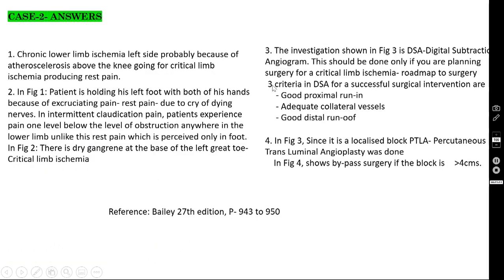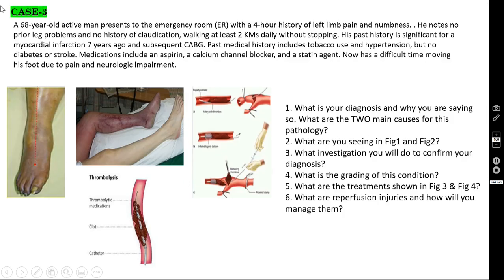This is what I have discussed. Case number 3: a 68-year-old active man presents to the emergency room with a 4-hour history of left limb pain and numbness. He was working at least 2 kilometers daily without stopping — there is no chronic problem in this case.